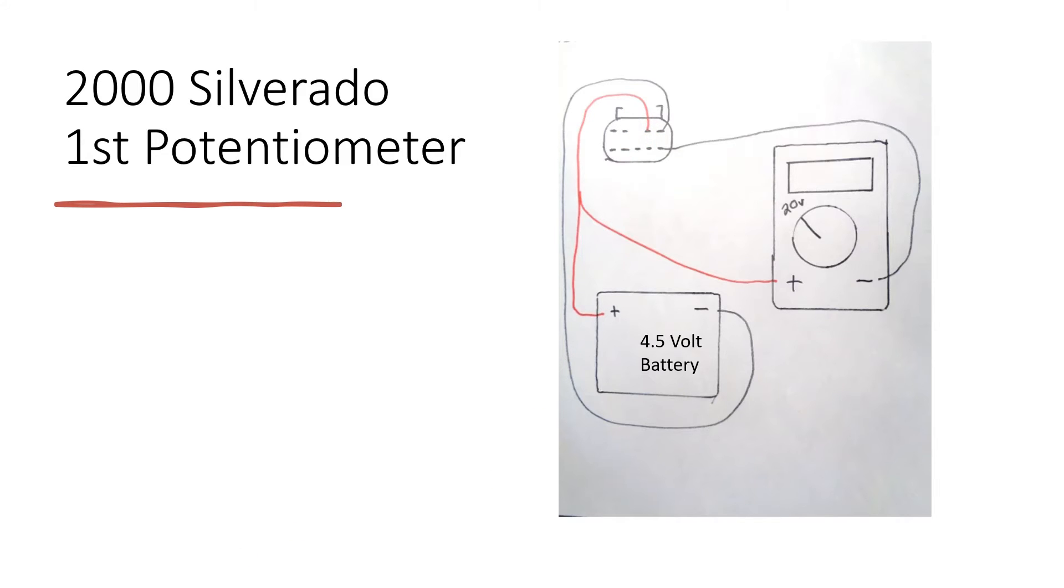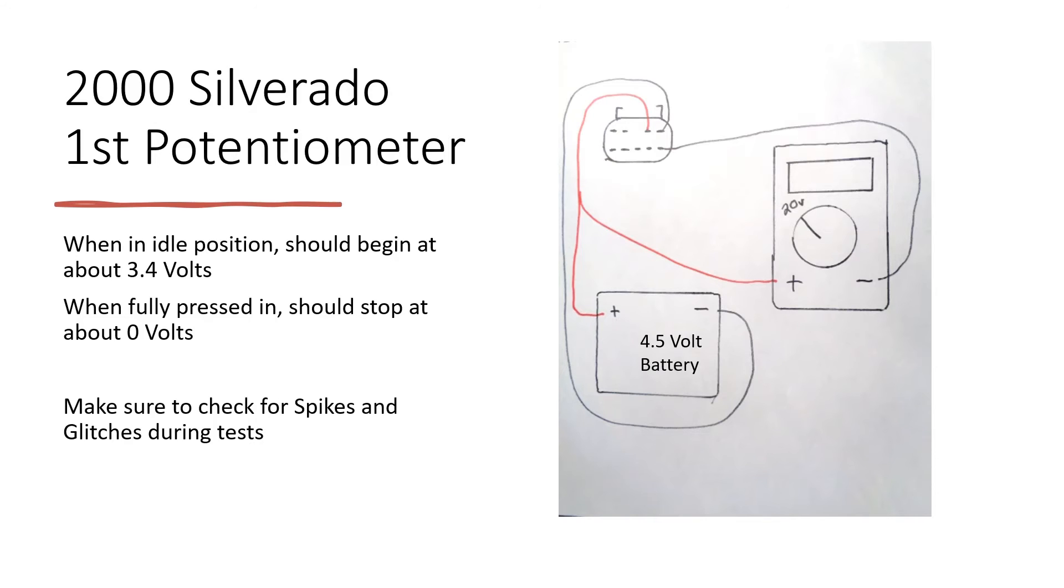After doing this, it should be reading about 3.4 volts in the idle position, and this is approximate. And then as you twist the flathead screwdriver, it should stop at about zero volts exactly. Just like in all the other videos I have said, you are checking for spikes and glitches during these tests.